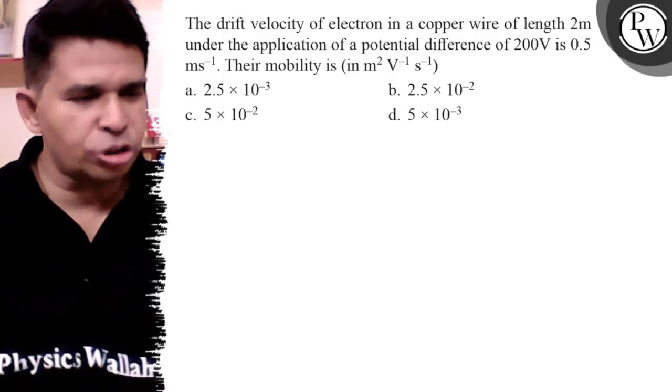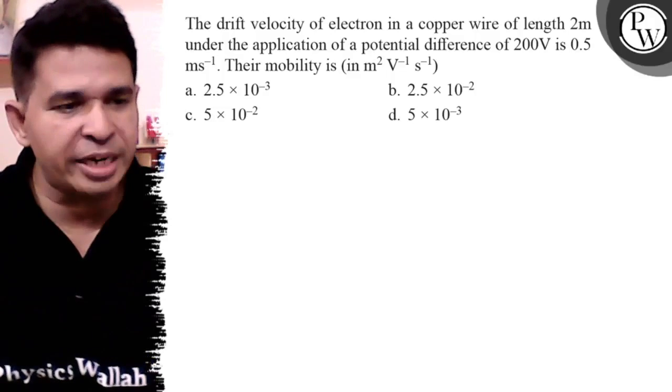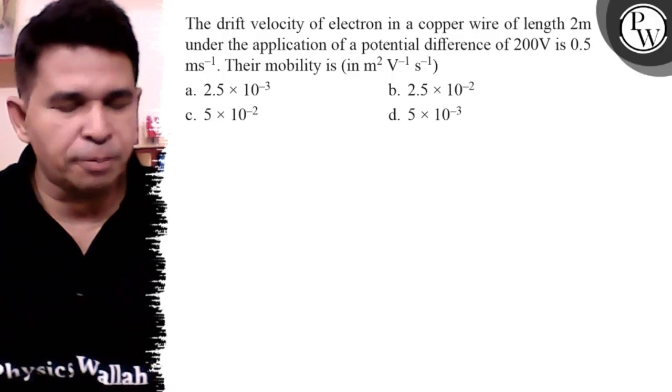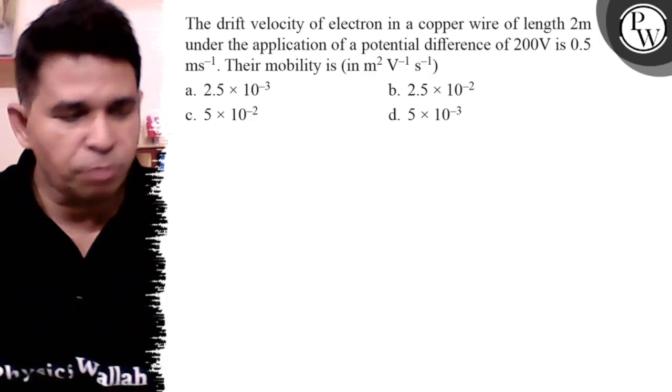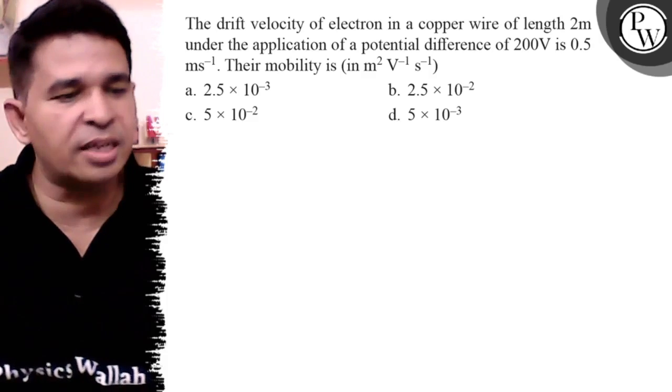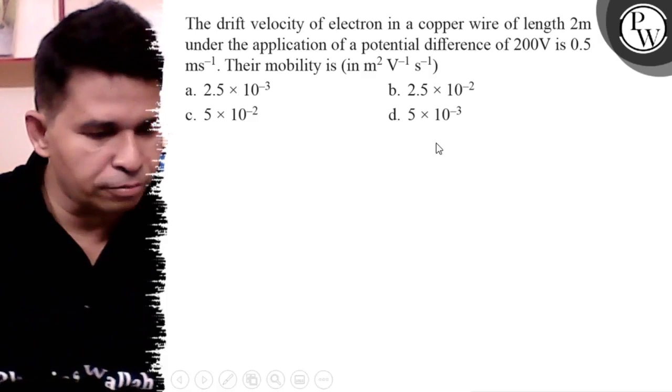Hello Bacho, let us see this question. The drift velocity of electrons in a copper wire of length 2 meters under the application of a potential difference of 200 volts is 0.5 m/s. We have to determine the mobility from this question.